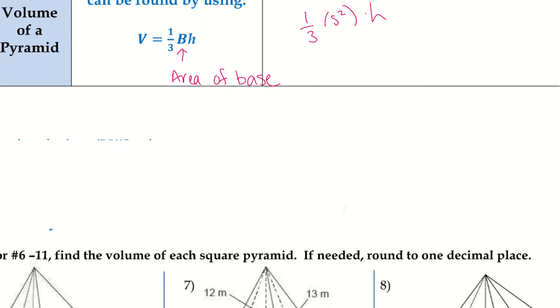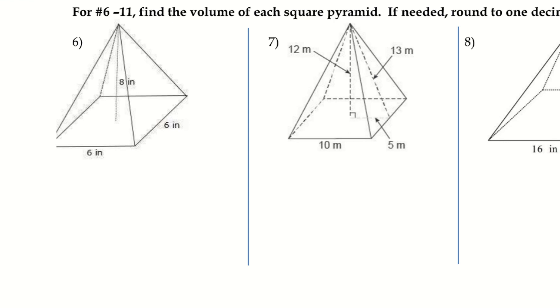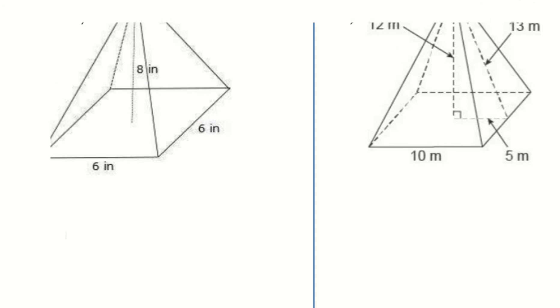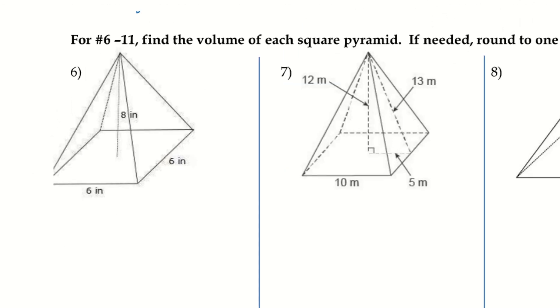All right, let's go try a couple examples. So, let's start with number six. So, find the volume of each square pyramid. If needed, round to one decimal place. So, and it does tell us this is a square pyramid.